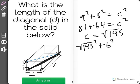Plus 6 squared, the second leg, will equal d squared.